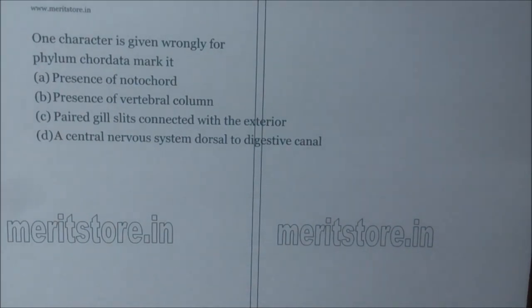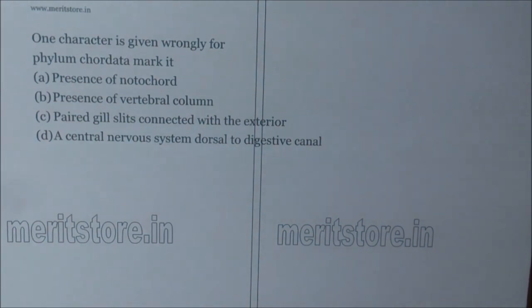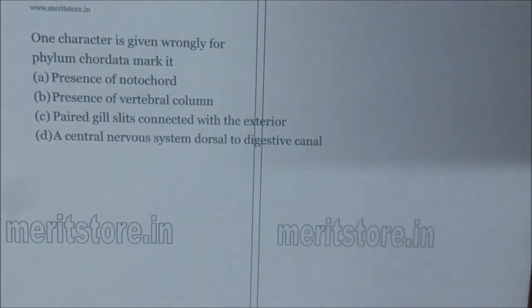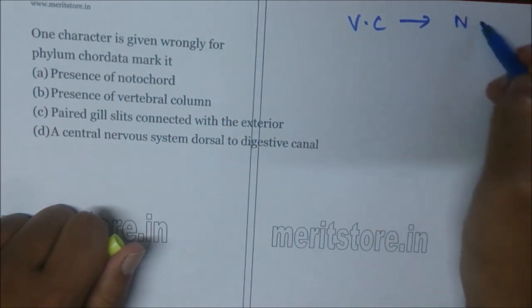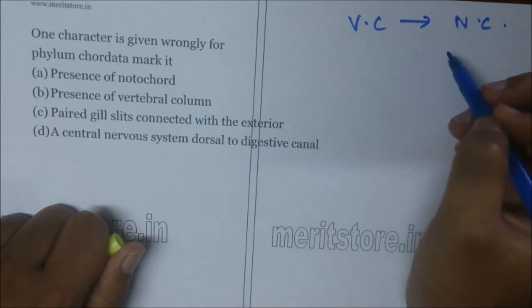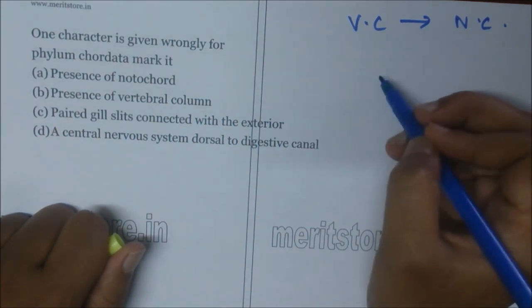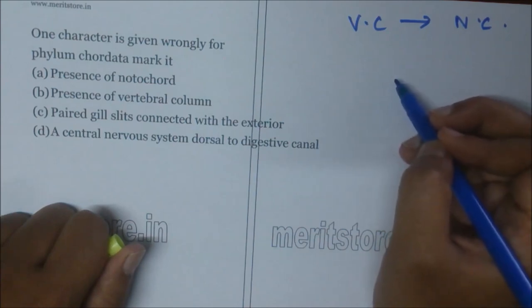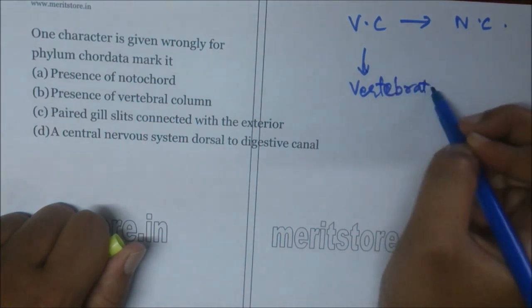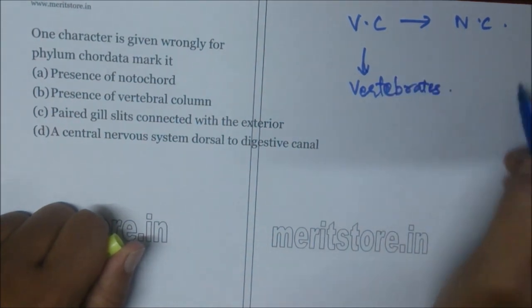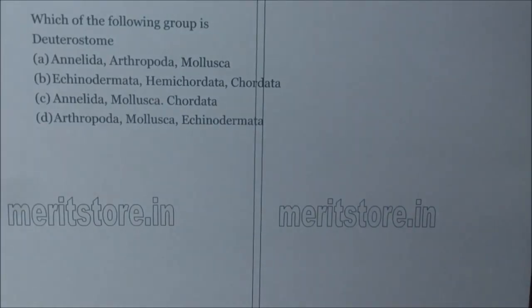Our next question: one character is given wrongly for phylum Chordata — mark it. A: presence of notochord, B: presence of vertebral column, C: paired gill slits connected with exterior, D: a central nervous system dorsal to digestive system. Vertebral column is formed by modification of notochord, so all chordates are not vertebrates, but all vertebrates are chordates. Vertebral column is present only in vertebrates, not in all chordates. So option B is the correct answer.